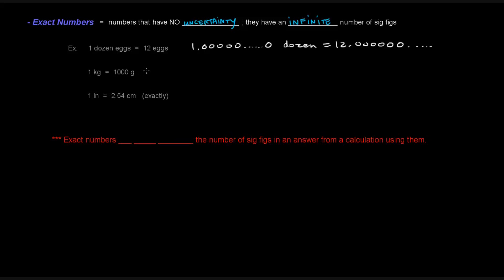One inch is exactly 2.54 centimeters — a really important conversion factor when switching between the English standard and metric systems. This is an exact number and does not limit your significant figures. Exact numbers do not limit the number of significant figures in an answer from a calculation using them. So a conversion factor that appears to have only one, two, or three sig figs won't limit your answer if it's an exact number.